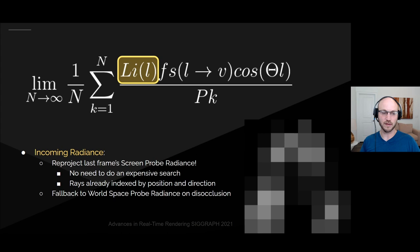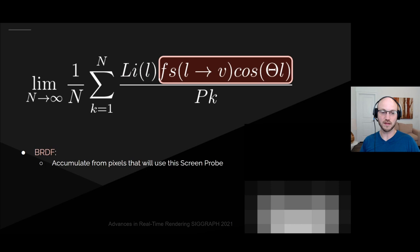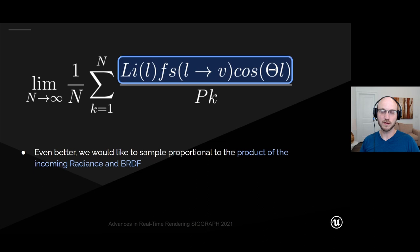Wherever reprojection fails — the position was off screen last frame or occluded — we fall back to the world-space radiance cache. For the BRDF, we accumulate the BRDF from all pixels that will actually use this screen probe after interpolation, which we know from the G-buffer. For a probe placed on a flat wall, about half of the rays will end up with a BRDF of zero, so we don't need to trace rays in those directions and can reassign those rays to important directions. Even better than importance sampling either function individually, we would like to importance sample their product.